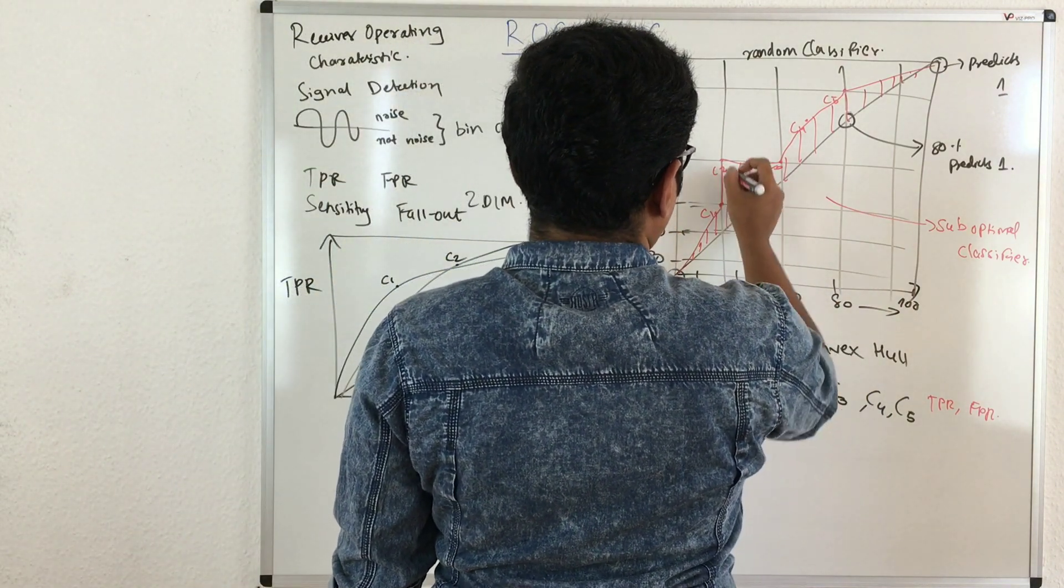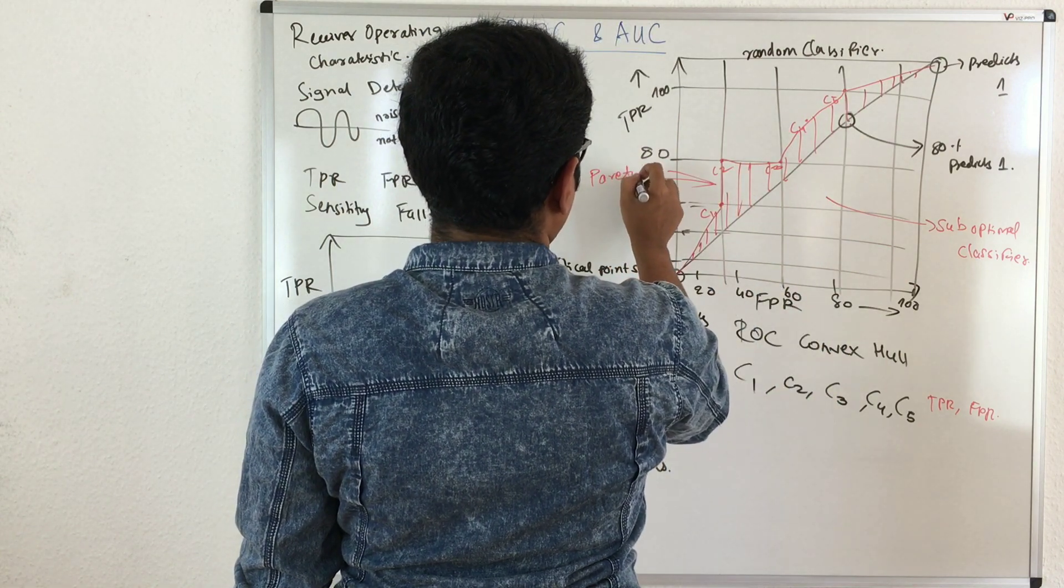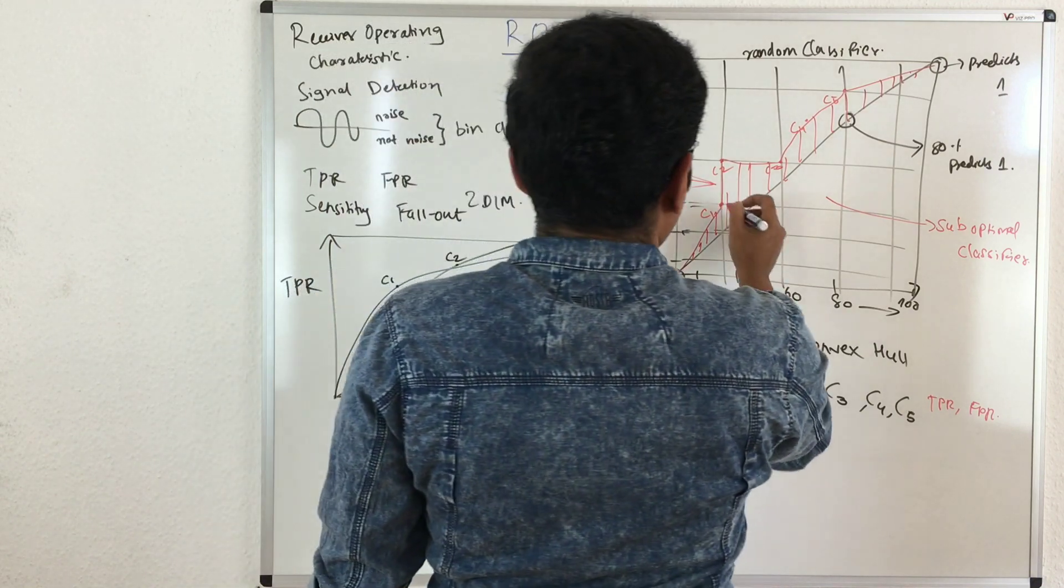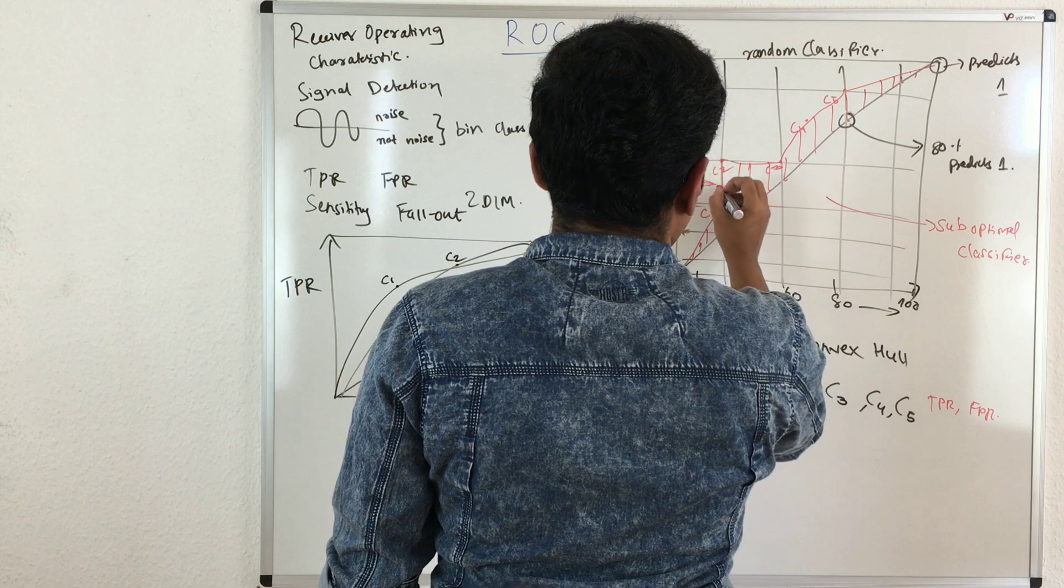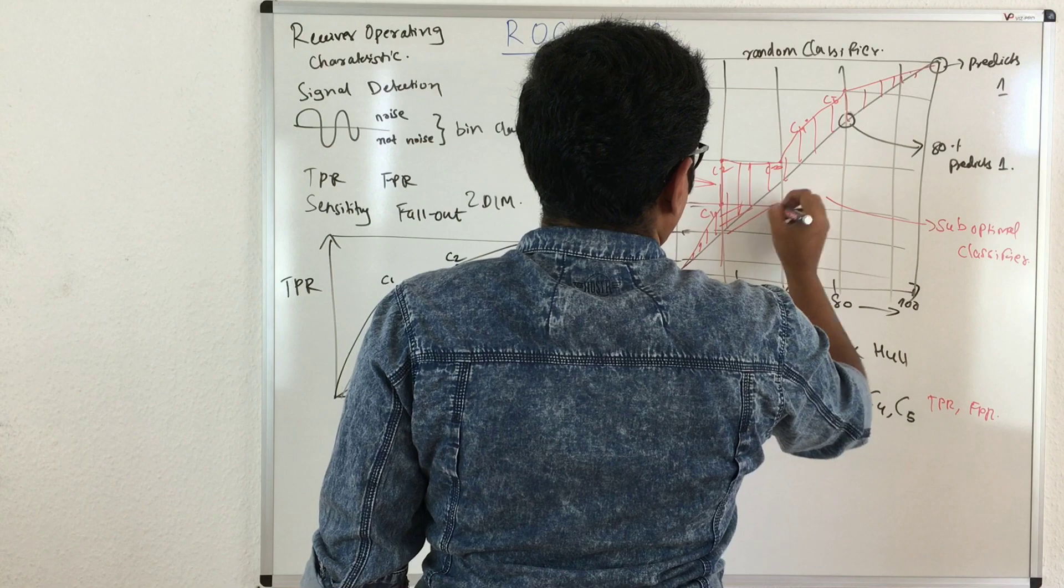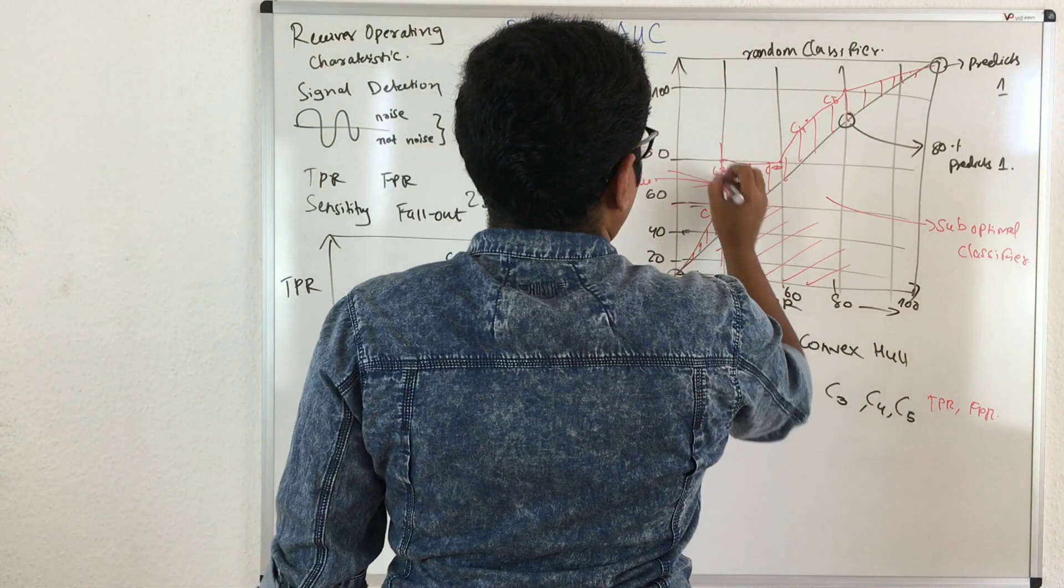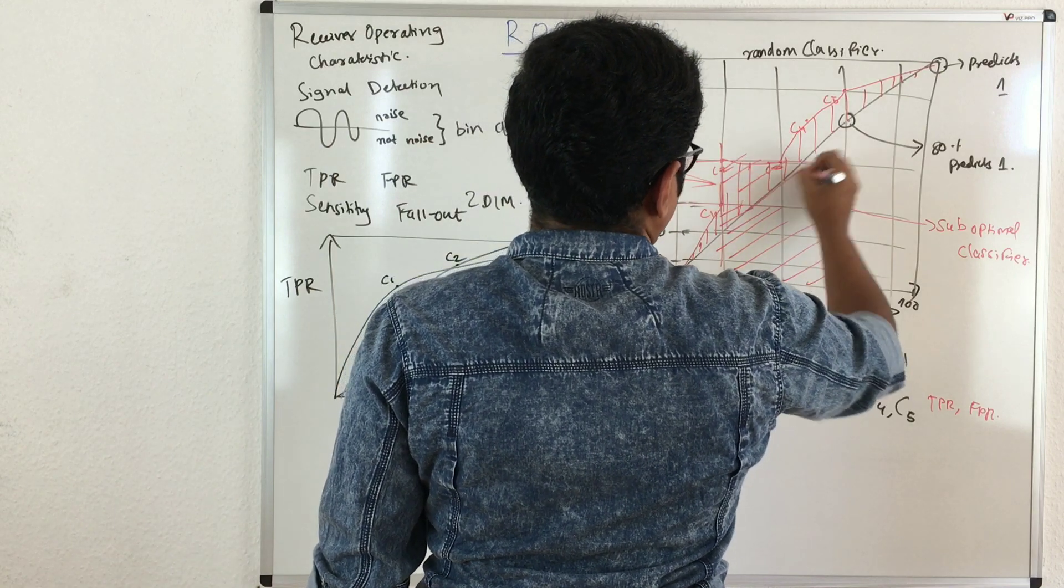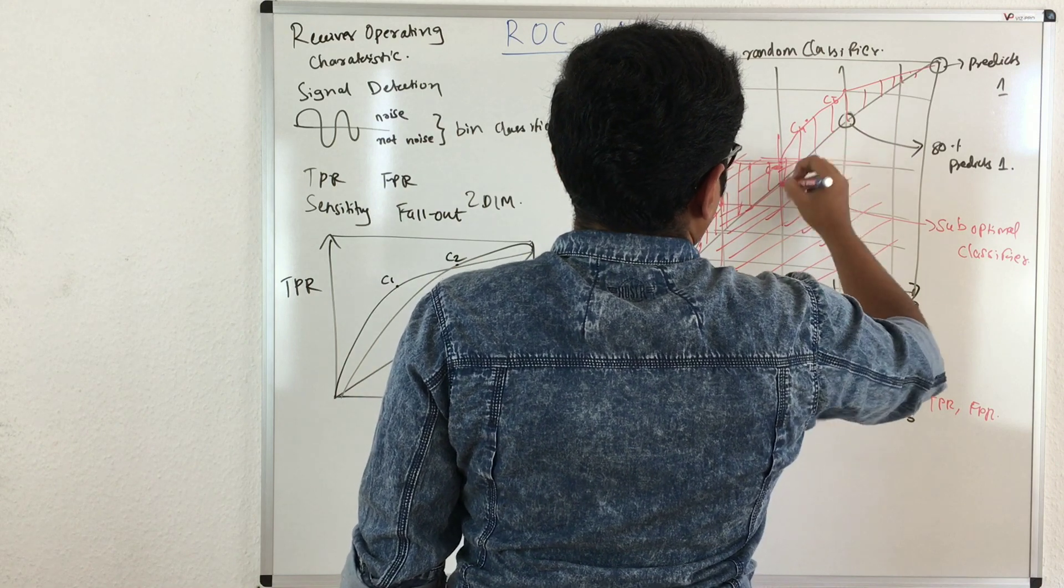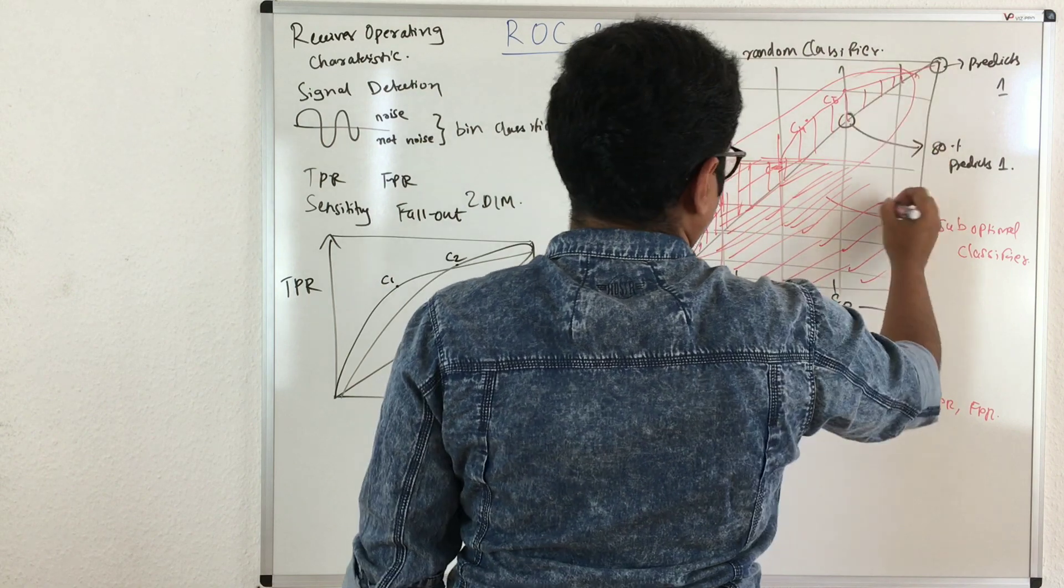Now how we constructed this point mainly comes from the concept of Pareto dominance. You have this point. What you do is basically construct one horizontal and vertical line, and you say all the instances which are below this are dominated by this point. Similarly here, all the instances below are dominated by this point. You construct all this and you get a front, which is called a convex hull.